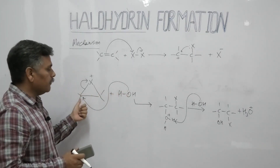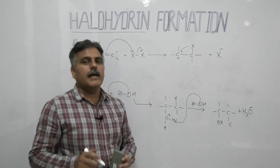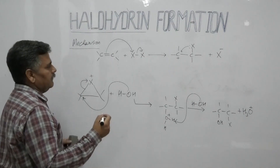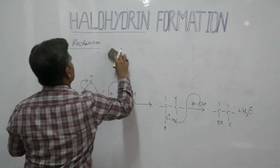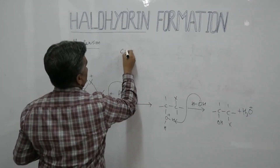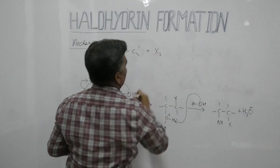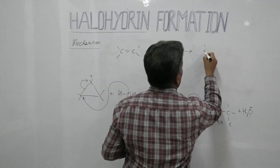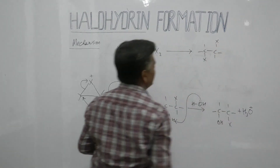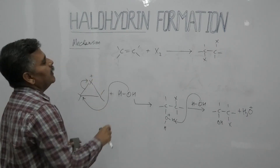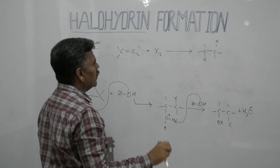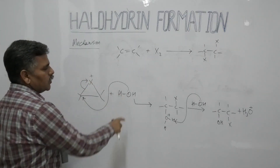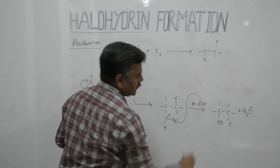So, when halogenation of an alkene is carried out in the absence of water or in the presence of an inert solvent like chloroform, the product is a vicinal dihalide. Vicinal dihalides are formed when the reaction is carried out without water. However, when the same reaction is carried out in the presence of water, instead of vicinal dihalides, the products are halohydrins.